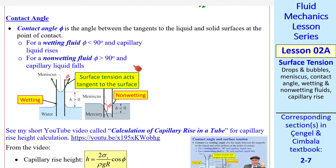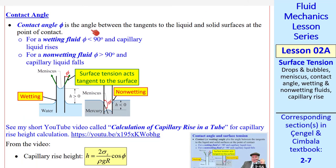Now let's talk about contact angle. We give it the symbol phi. It's an angle, the angle between the tangents to the liquid and solid surfaces at a point of contact. For a so-called wetting fluid, phi is less than 90 degrees and capillary liquid rises, as illustrated here. Notice that the contact angle, as we defined up here, is less than 90 degrees.